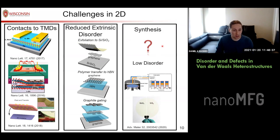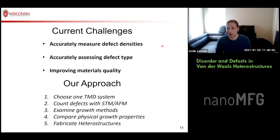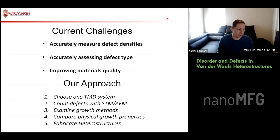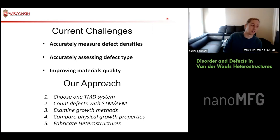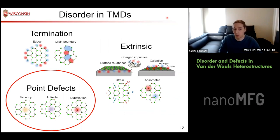How do we actually achieve low disorder for the materials on hand? We have to look into the material, accurately measure their defect densities, assess the defect types, and implement that knowledge to change our growth parameters — much like you would expect with any synthesis method. The way I've gone about this is to choose one particular transition metal dichalcogenide system, count the defects with STM or even more recently with AFM, re-examine the growth methods, compare these physical growth properties, and then fabricate heterostructures to see which gives the best properties and see if that matches our point defect density.